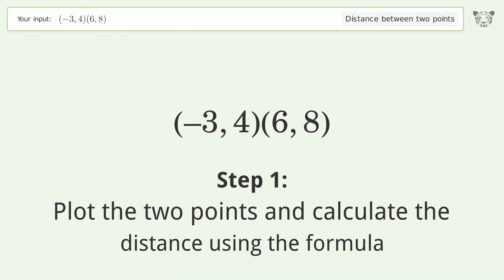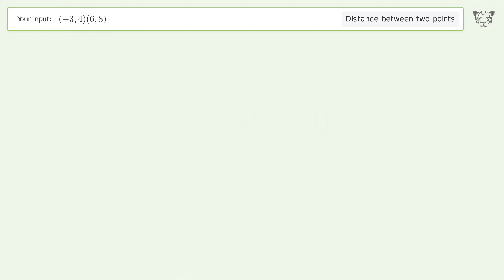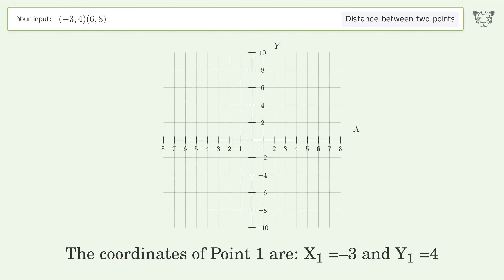Plot the two points and calculate the distance using the formula. The coordinates of point 1 are x1 equals negative 3 and y1 equals 4. The coordinates of point 2 are x2 equals 6 and y2 equals 8.